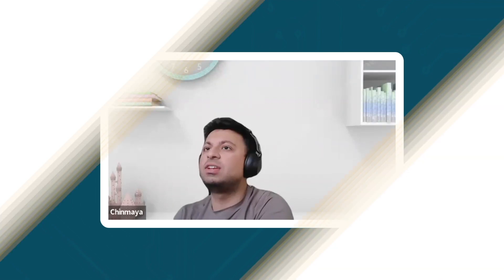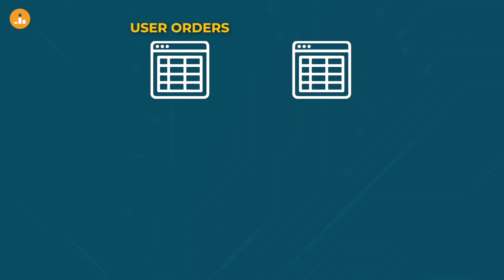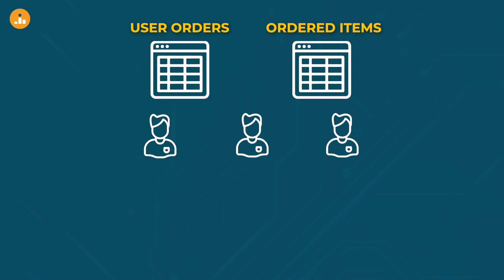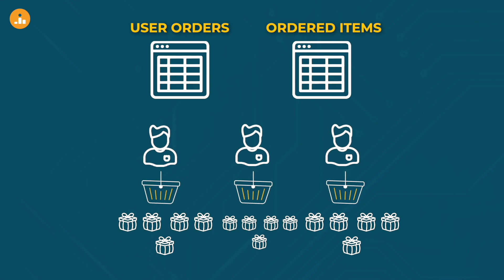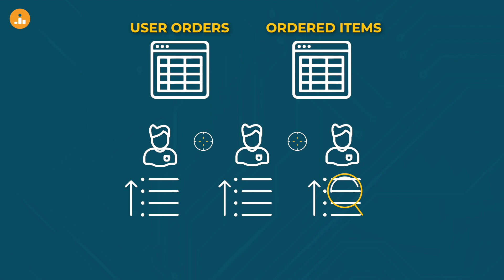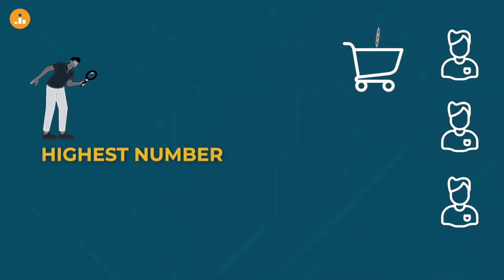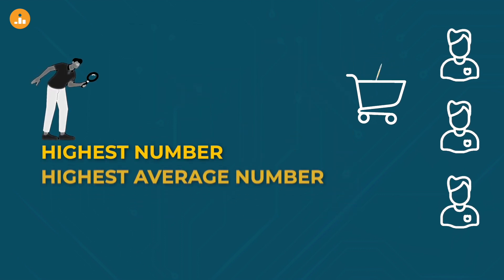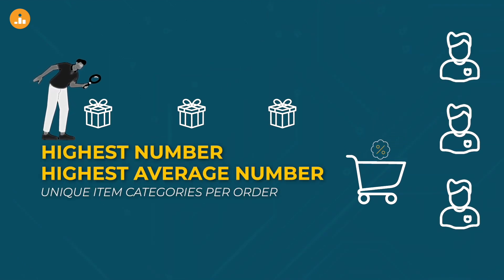The question we have is that we've been provided with two tables: user orders and ordered items. A user can have multiple orders and within each order there may be multiple items with either the same or different categories. We have to find a user that has the highest average number of unique item categories per order.